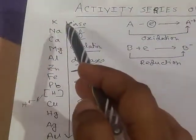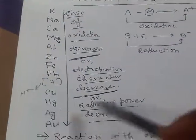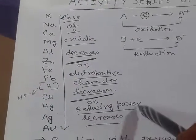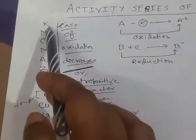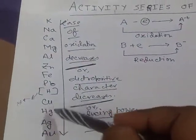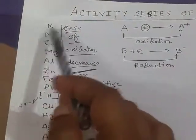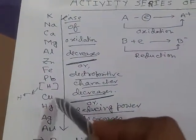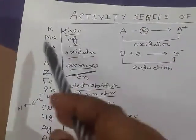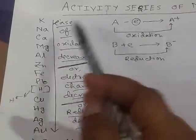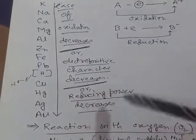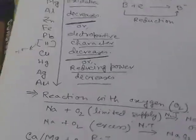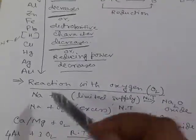Electropositivity or electropositive character of the elements decreases if we move down from potassium to aurum. Similarly, reducing power decreases along the series: potassium has very high reducing power whereas copper and mercury have low reducing power. So the important properties along the activity series are: ease of oxidation decreases, electropositivity decreases, and reducing power decreases.